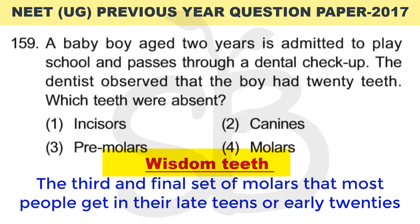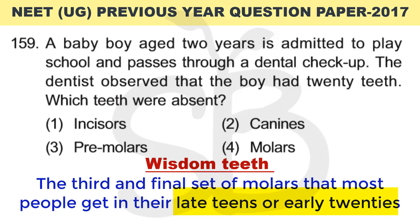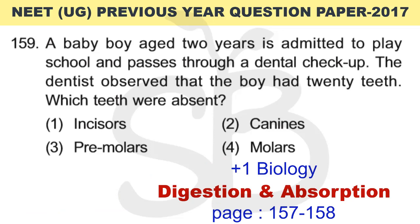Premolars are part of secondary dentition, and so is the wisdom tooth. Primary dentition consists of 20 teeth — incisors, canines, and molars — but does not include premolars. That is discussed in Plus 1 biology, chapter: Digestion and Absorption, pages 157-158.